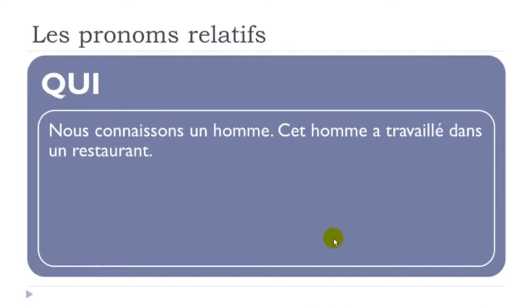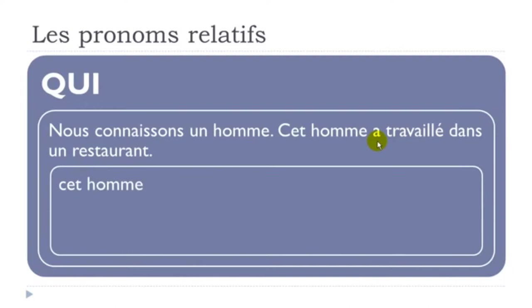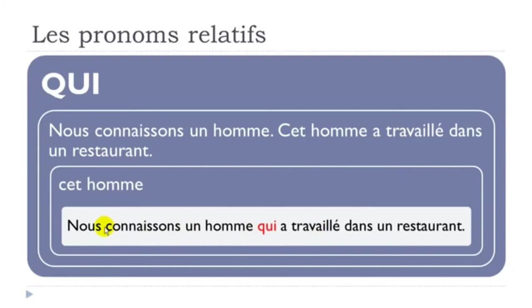Now the same sentence with the passé composé: 'Nous connaissons un homme' + 'Cet homme a travaillé dans un restaurant.' We don't want to repeat 'cet homme', so we get: 'Nous connaissons un homme qui a travaillé dans un restaurant.' Even with passé composé — which has two forms (avoir + participe passé) — it is still one verb, so 'qui' comes before it.